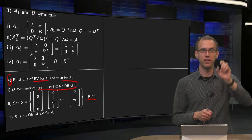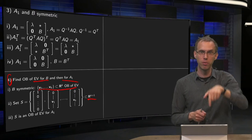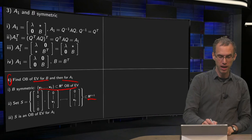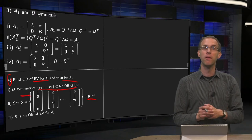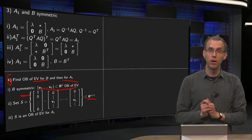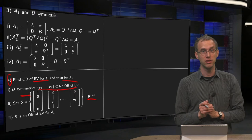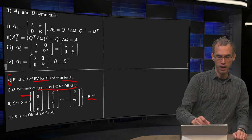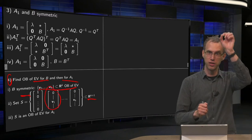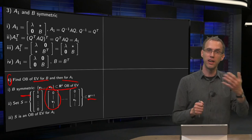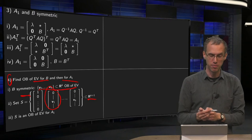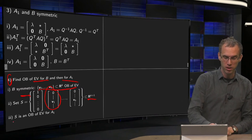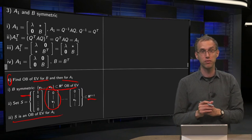We then add the vector e1 = (1, 0, 0, …, 0) to the set. This gives an orthonormal set of vectors in Rᵏ⁺¹. When you compute A1 times a vector of the form (0, vi), you find that it returns the corresponding eigenvalue of B times that same vector, so these are eigenvectors of A1. Therefore the set S is an orthonormal basis of eigenvectors for A1.